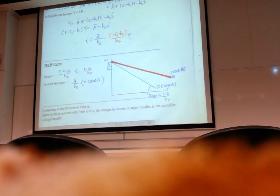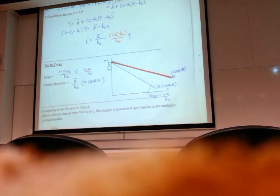So in this case, you could see you actually get a flatter IS. So what is the meaning of flatter IS? You have to tell the examiner. You cannot say flatter because the slope is smaller. You have to give the economic intuition.